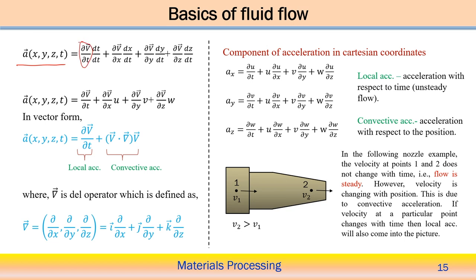So here: del V by del t, dt by dt; del V by del x with respect to x, dx by dt; del V by del y, del y by del t; del V by del z and del z by del t. Here dV by dt represents the velocity change with respect to time. dV by dx is given, but dx by dt represents the velocity u. Similarly, dy by dt is velocity v and dz by dt is velocity w. So this is the acceleration, and in vector form this acceleration can be written as del V by del t plus V dot gradient of the velocity vector.